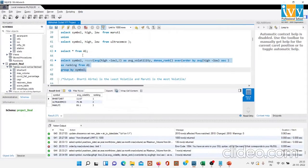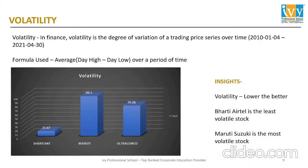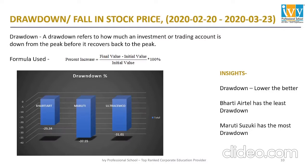We can see the average volatility of all the companies. Bharti Airtel's average volatility was 11.6, Maruti Suzuki's was 99.1, and Ultratech Cement's was 75.36. The insight is: volatility lower is better. Bharti Airtel is the least volatile stock and Maruti Suzuki is the most volatile stock.